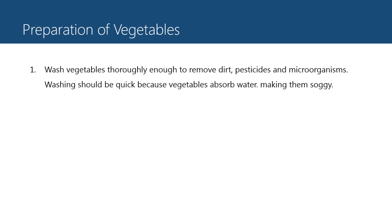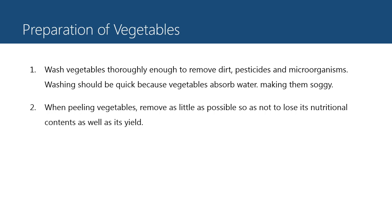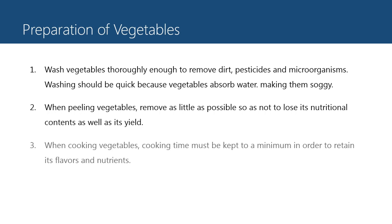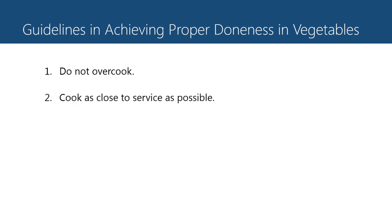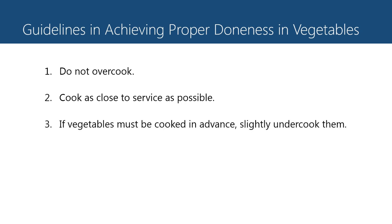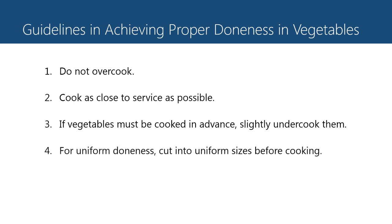Preparation of vegetables: wash vegetables thoroughly enough to remove dirt, pesticides, and microorganisms. When peeling vegetables, remove as little as possible so as not to lose nutritional content or yield. When cooking vegetables, cooking time must be kept to a minimum in order to retain flavor and nutrients. Guidelines for achieving proper doneness: first, do not overcook; second, cook as close to service as possible; third, if vegetables must be cooked in advance, lightly undercook them; fourth, for uniform doneness, cut into uniform size before cooking.